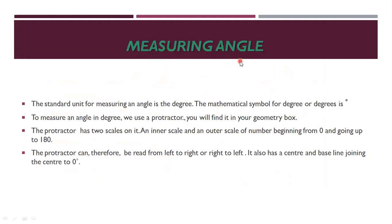Next, measuring angles. The standard unit for measuring an angle is the degree, written as a small superscript zero. To measure an angle in degrees we use a protractor, which you will find in your geometry box. The protractor has two scales: an inner scale and an outer scale of numbers, both beginning from zero and going up to 180.